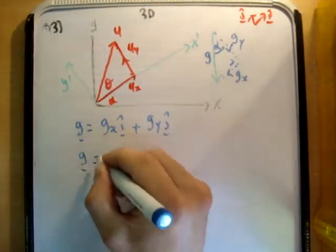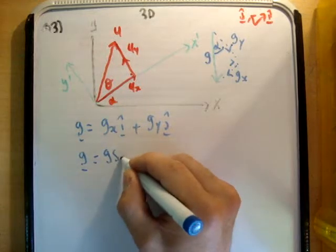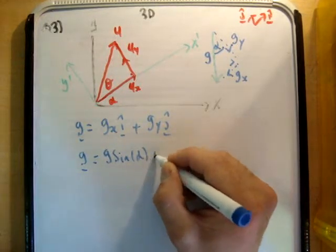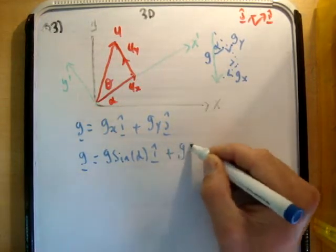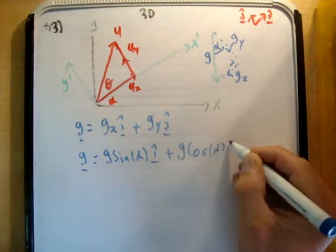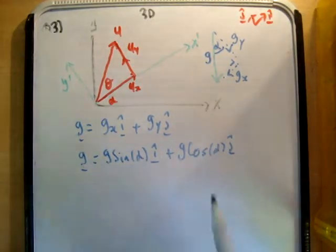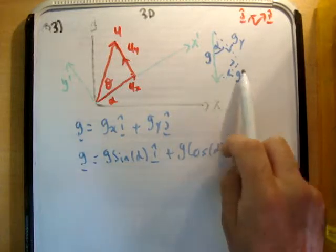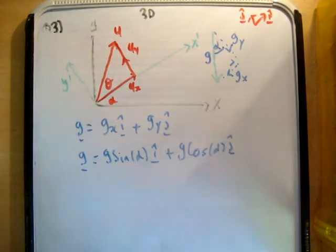So g is equal to g times the sine of alpha i hat plus g times the cosine of alpha j hat. And the reason for that is that sine in this case is opposite and it corresponds to the i hat unit vector direction. So that's all we can do there so far.